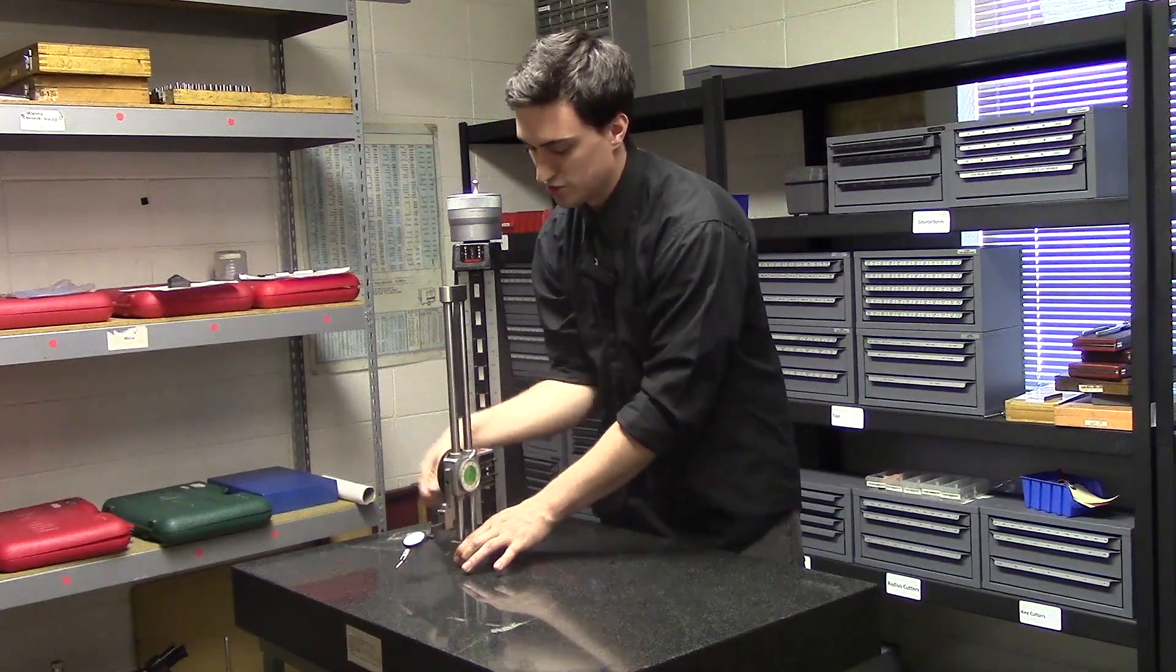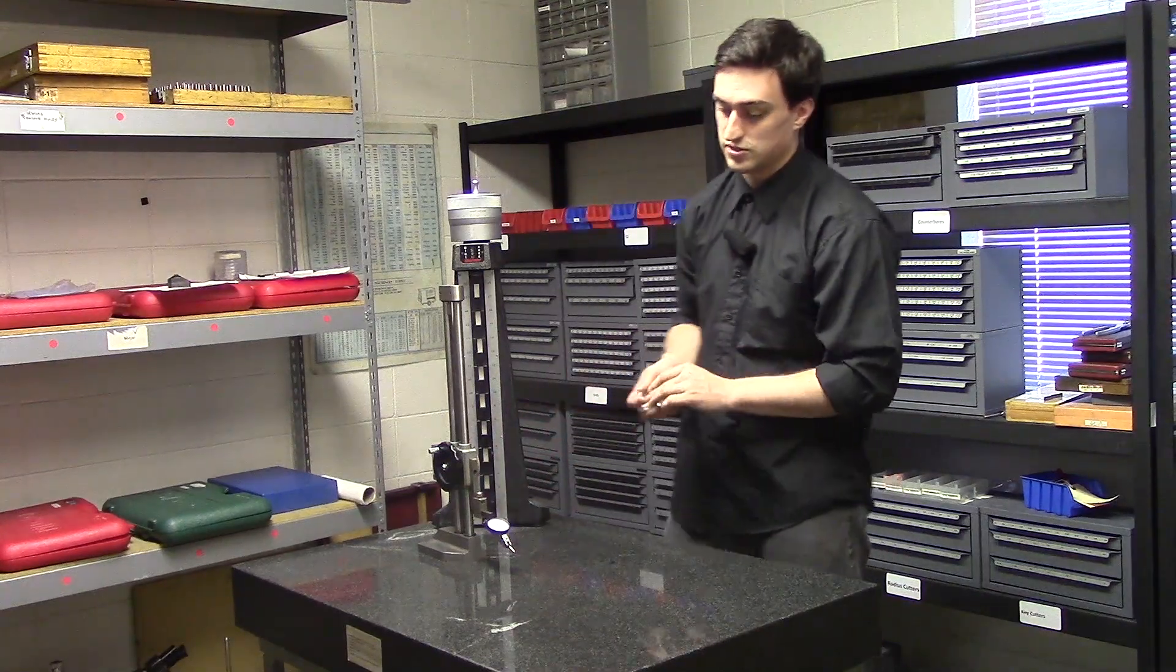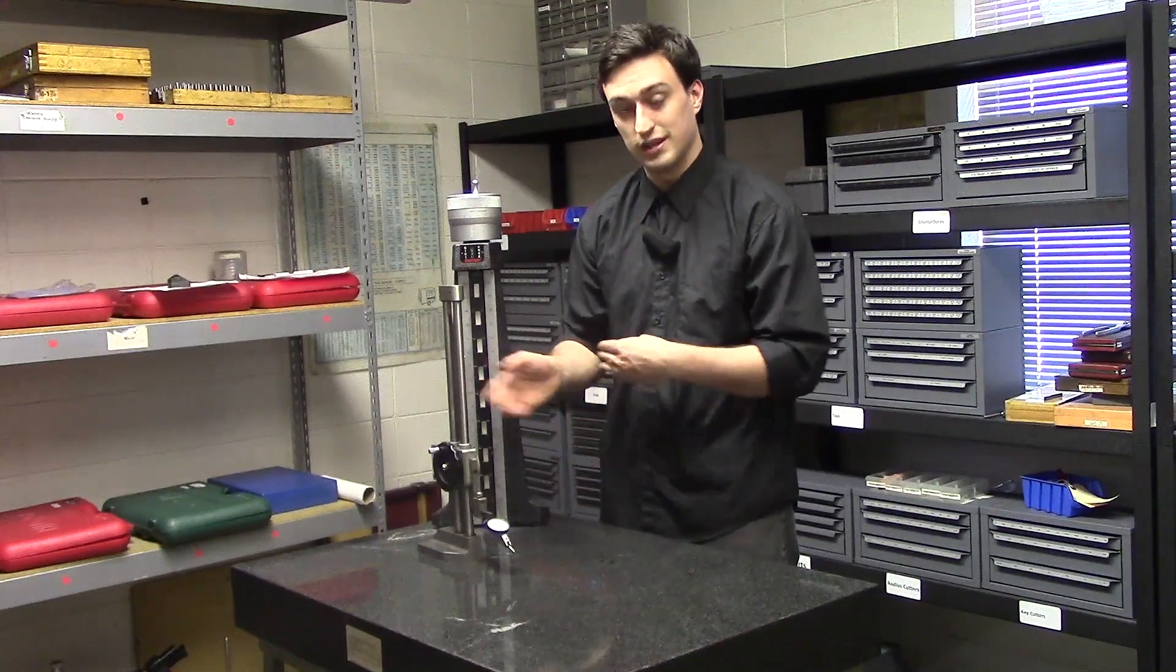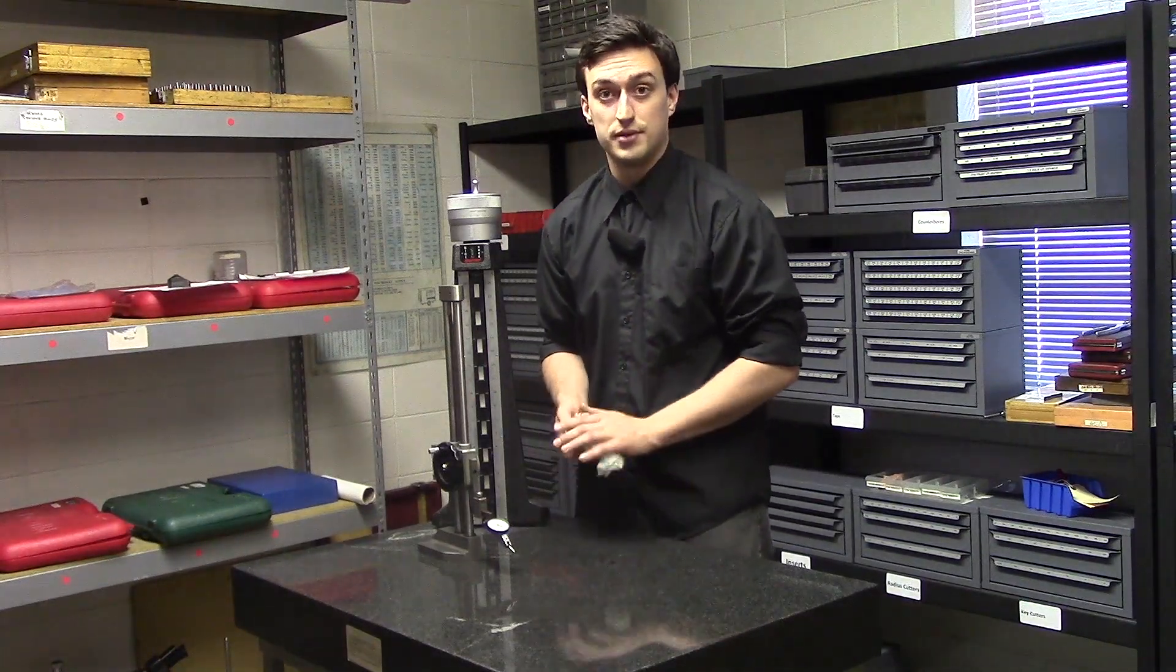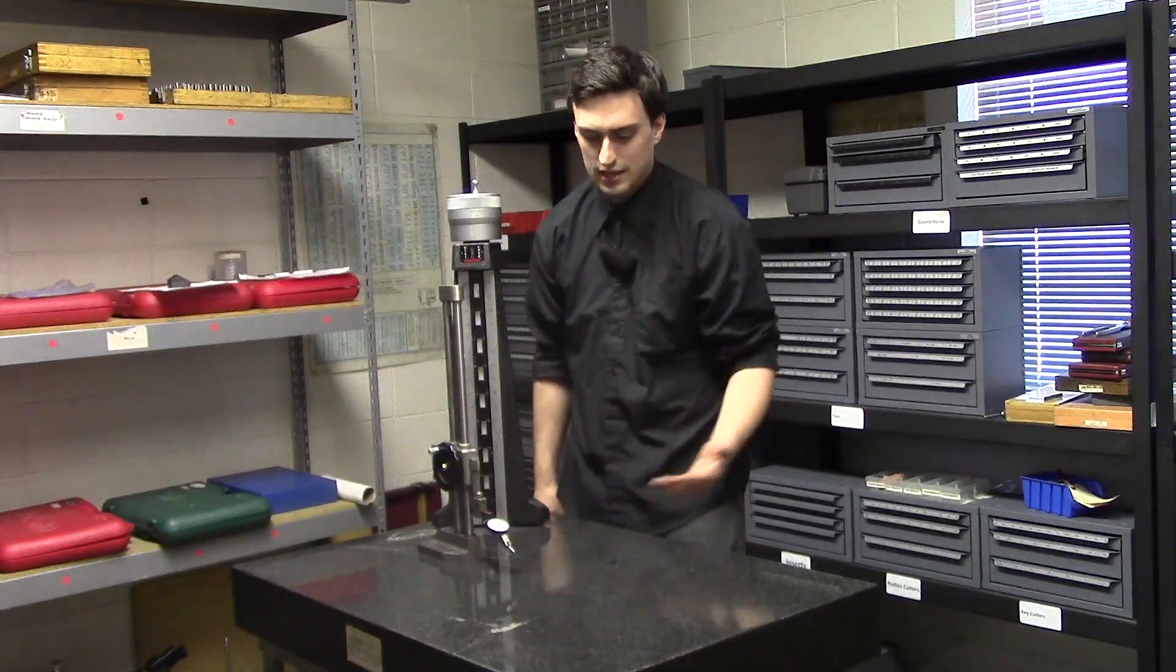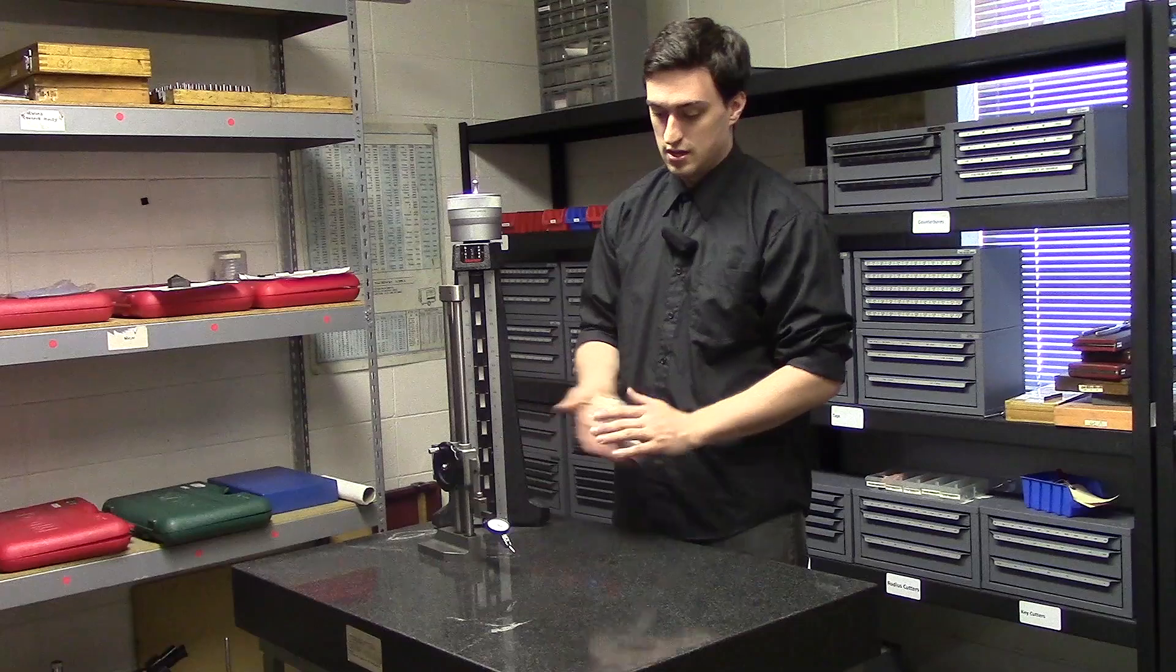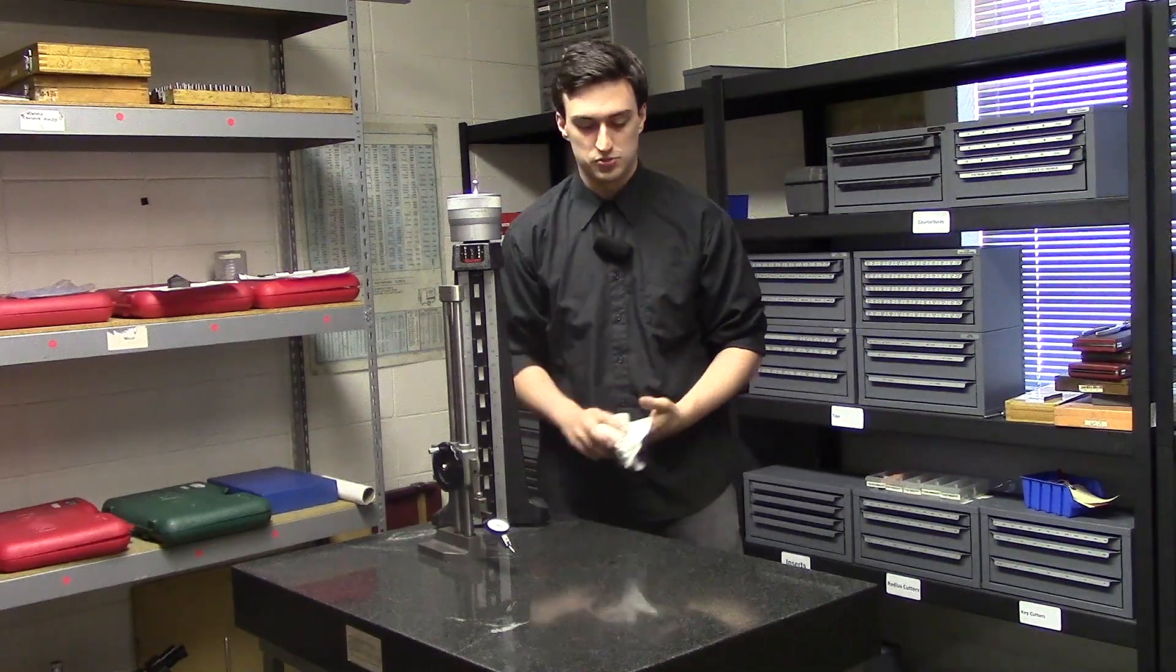But you want to make sure you have your indicator. And this is a Mitutoyo indicator. We actually have this on our website under store and recommended tools. It has a link to Amazon which is a little bit cheaper than MSC. But it is a great indicator. It's very visible and has a ruby tip as well.